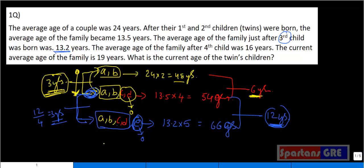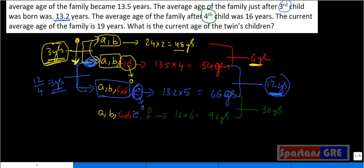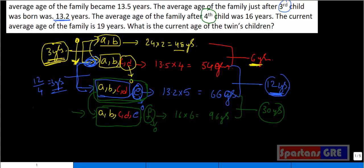Now with A, B, C, D, E — one more person, the fourth child F, is born. When F is born, the average of the family is 16 years. We now have 6 people, so total age is 16 into 6 equals 96 years. The age gap here is 30 years. F's age is 0, and the previous 5 people aged by 30 years total. So 30 divided by 5 gives a time gap of 6 years from E's birth to F's birth.